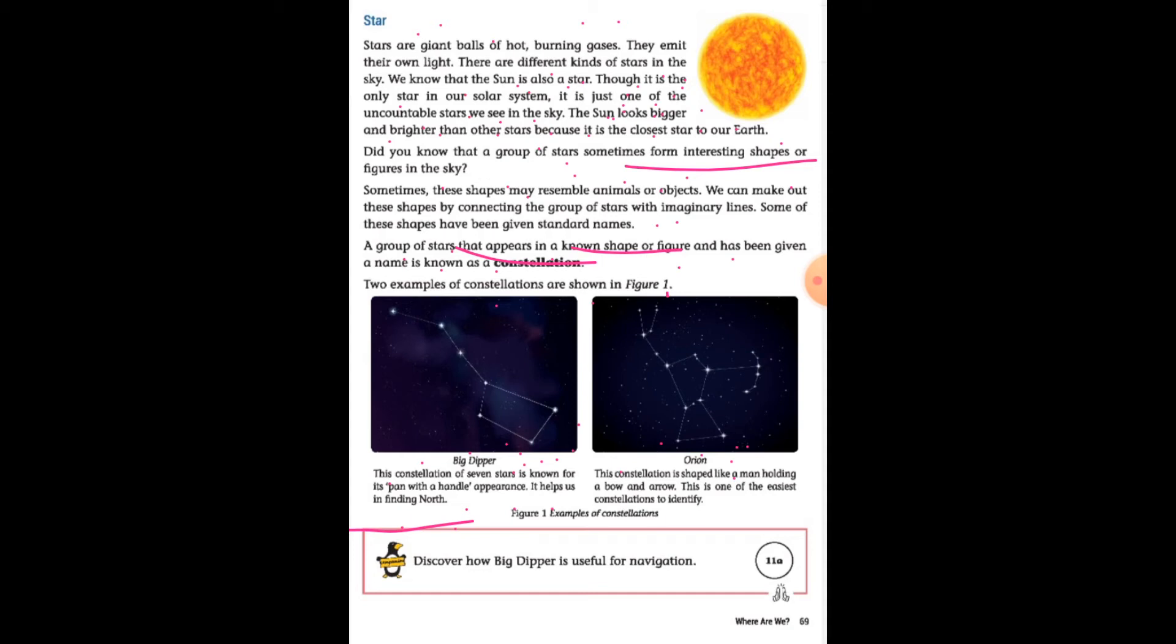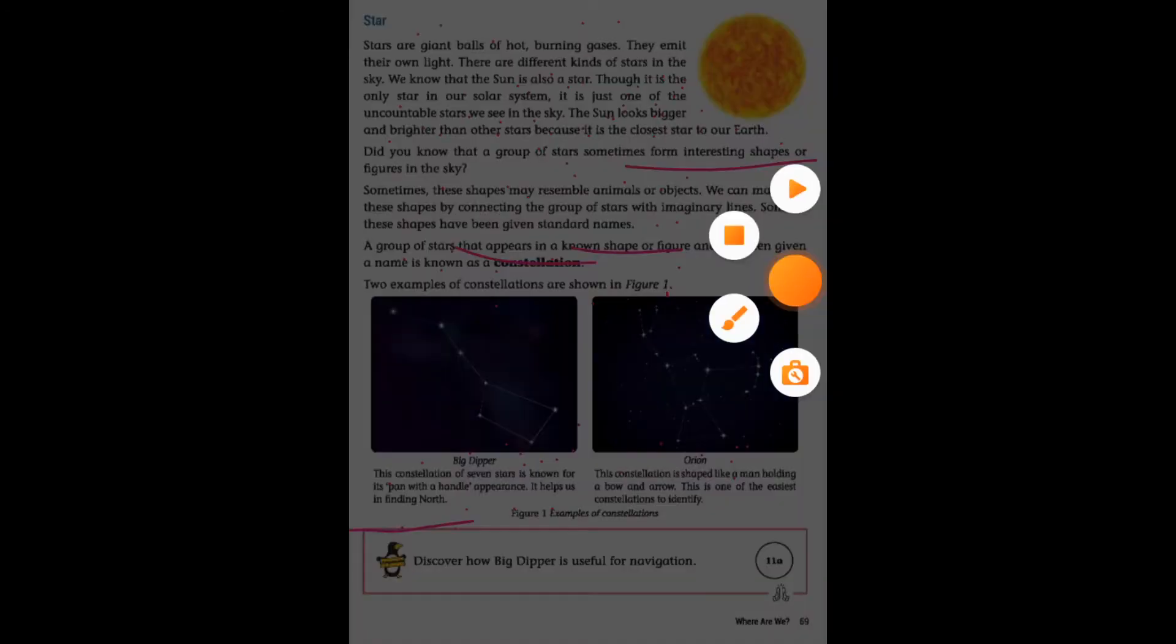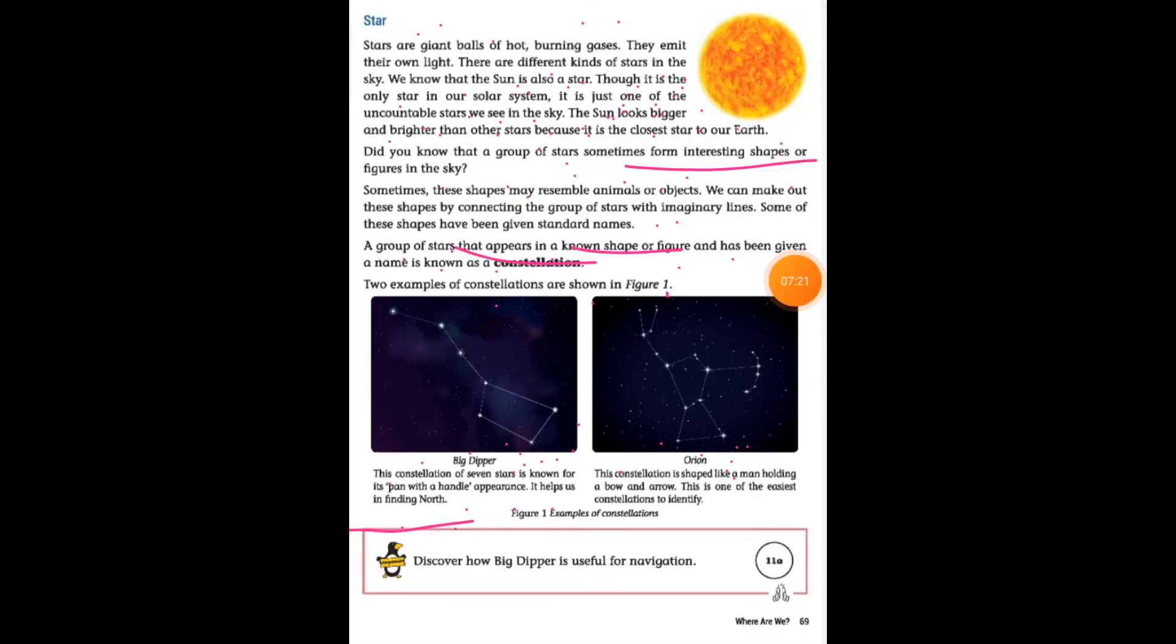Orion constellation is shaped like a man holding a bow and arrow. This is one of the easiest constellations to identify.